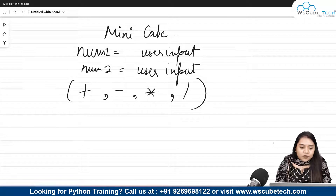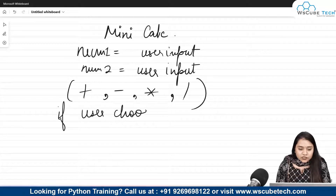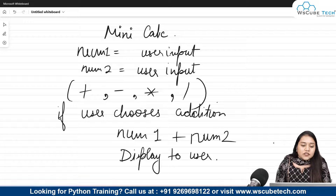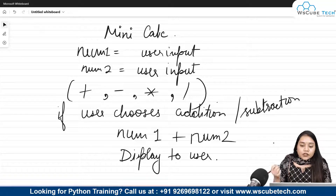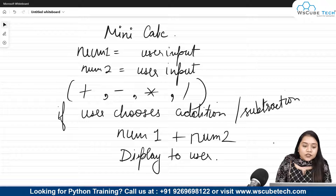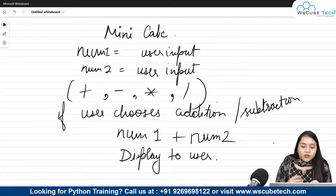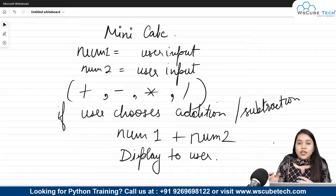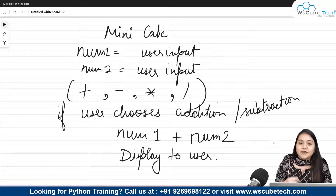Next we will write the conditional statements. If the user chooses addition, we will add number one plus number two and display it. Similarly, if the user chooses subtraction, we will do number one minus number two. For multiplication, we will multiply both numbers, and for division, we will divide both numbers. So all we need is two user inputs, display the options, then use conditional statements for each operation, and finally get the output.